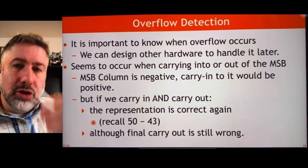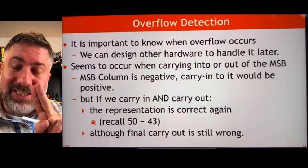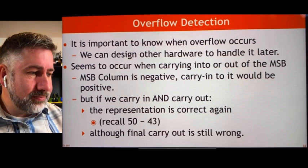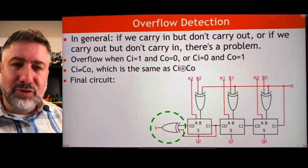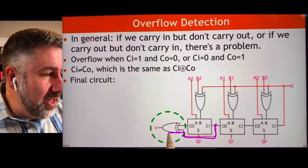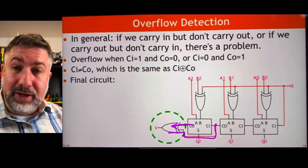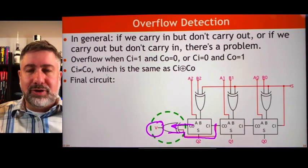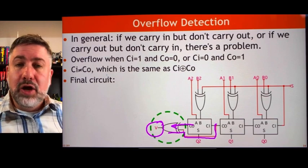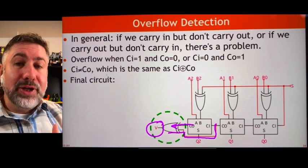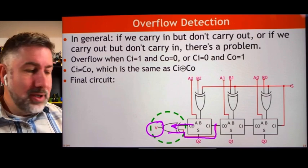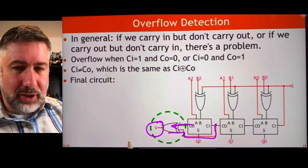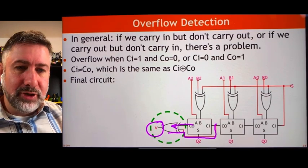All we have to do is look at the carry in and carry out of the top bit and check if they are different — if they are different, it's a problem; if they are the same, it's OK. We have a gate that can do that: the exclusive OR gate. It looks at the carry into and carry out of the top bit and if they're different, raises a flag. Remember arithmetic logic units and flags? We raise an overflow flag to say something went wrong and this value should not be trusted.